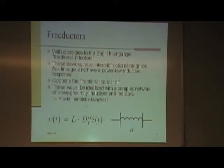Ideally, these devices have internal fractional magnetic flux linkage, which means they have a power law inductive response. They are kind of the opposite if you will of a fractional capacitor. I think the idealist design would probably be some kind of jungle of carbon nanotubes, which are extremely efficient and can generate a lot of magnetic flux in a tight amount of space. But they would perform this basic function.